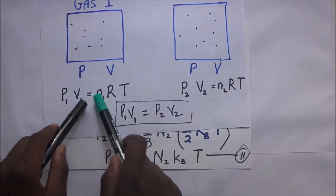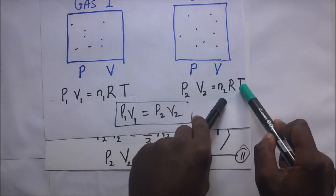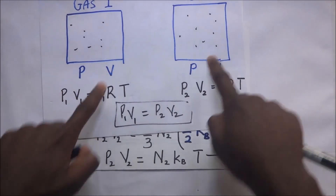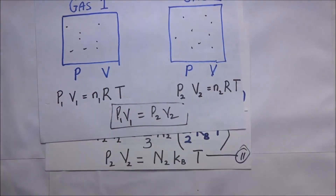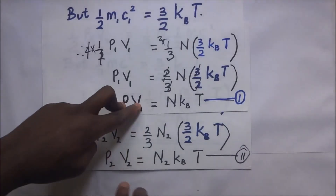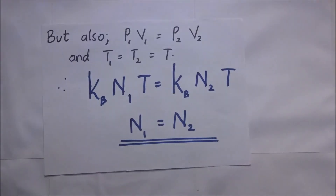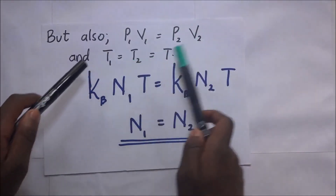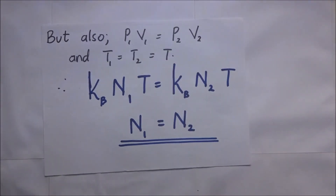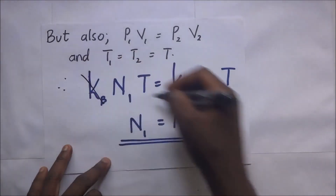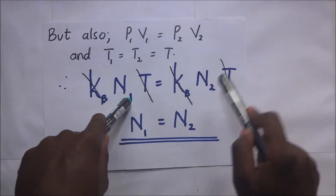Since the pressures and volumes are the same, P1V1 equals P2V2, just as we showed using the ideal gas equation. Since these two are equal, the right-hand sides must also be equal. The temperature T1 equals T2 equals T, and the temperatures cancel. Boltzmann's constant kb also cancels, leaving us with N1 equals N2 — the number of particles in gas one equals the number of particles in gas two.